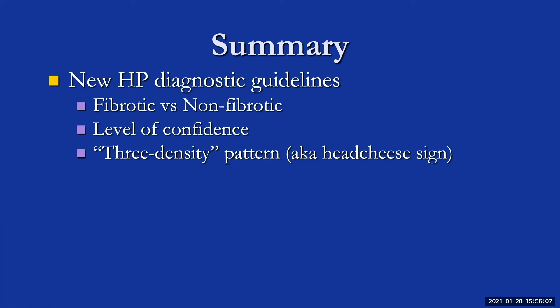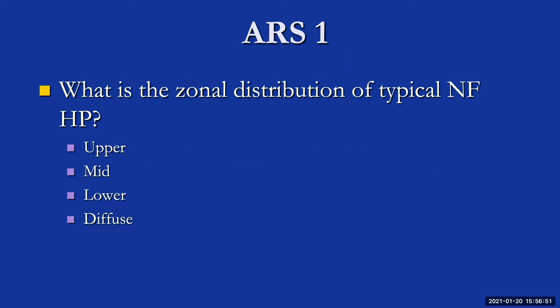In summary, we discussed the new HP diagnostic guidelines — please read the full paper or you'll have holes in your knowledge base. Key takeaways: instead of categorizing based on temporality, categorize HP based on presence or absence of fibrosis. Establishing level of confidence — typical, compatible with, or indeterminate for HP — is important in both fibrotic and non-fibrotic disease. And the three-density pattern has now taken the place of the head cheese sign.